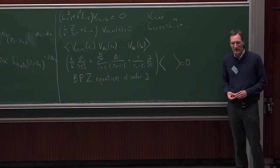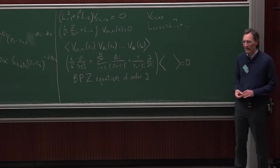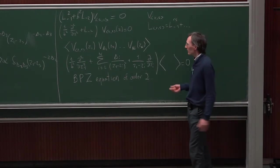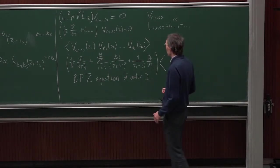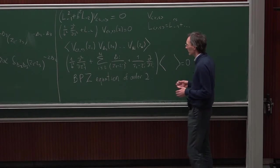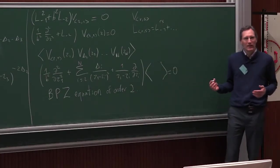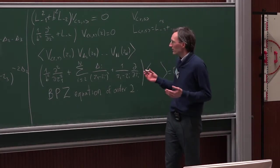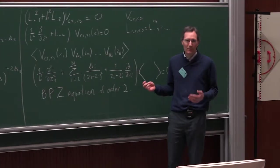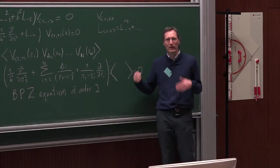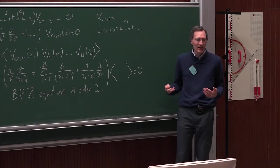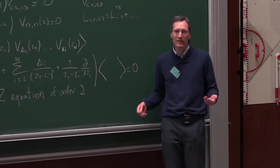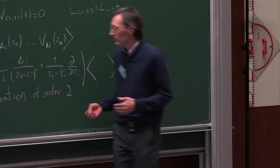Let's discuss this BPZ equation in the case of a four-point function. Why a four-point function? Because thanks to global conformal symmetry, the four-point function reduces to a function of just one variable — one cross-ratio. Therefore, we expect that the BPZ equation reduces to an ordinary differential equation instead of a partial differential equation.